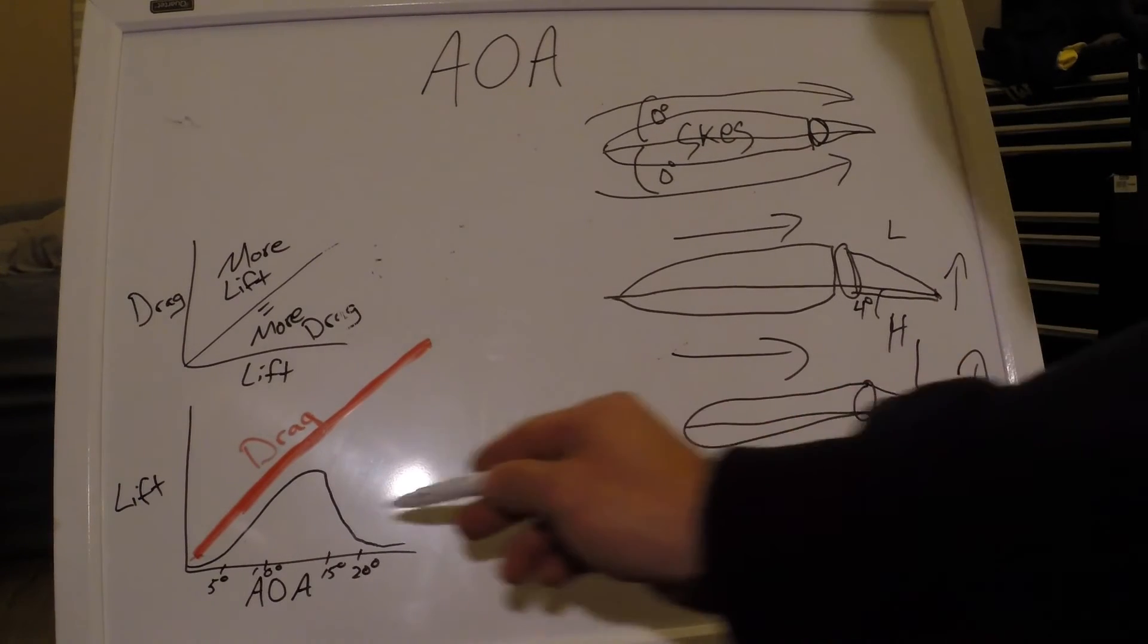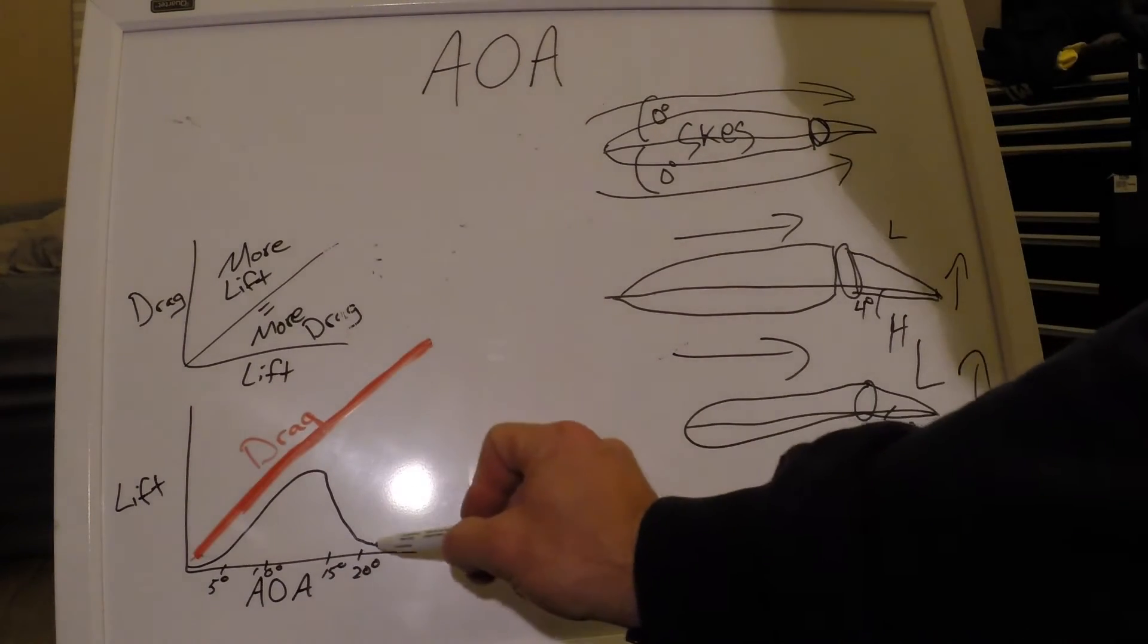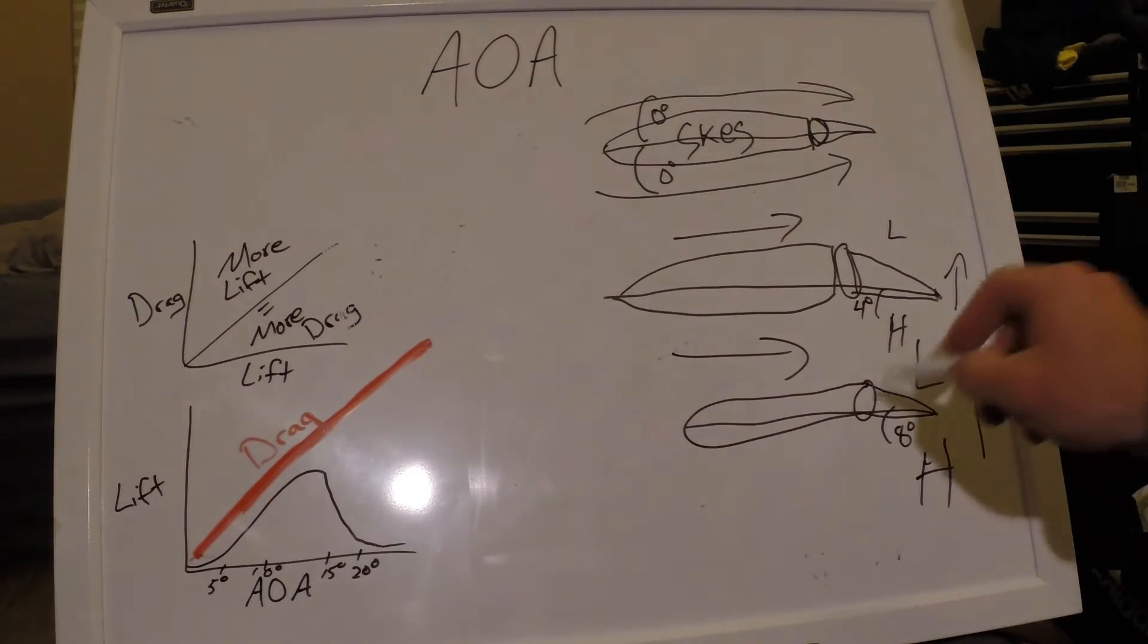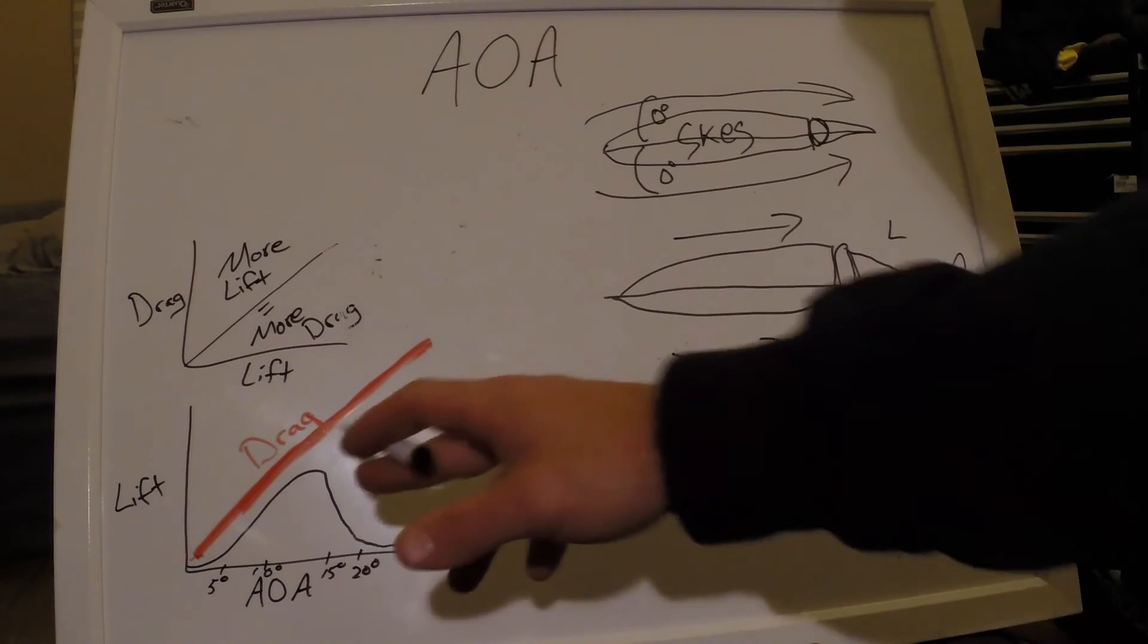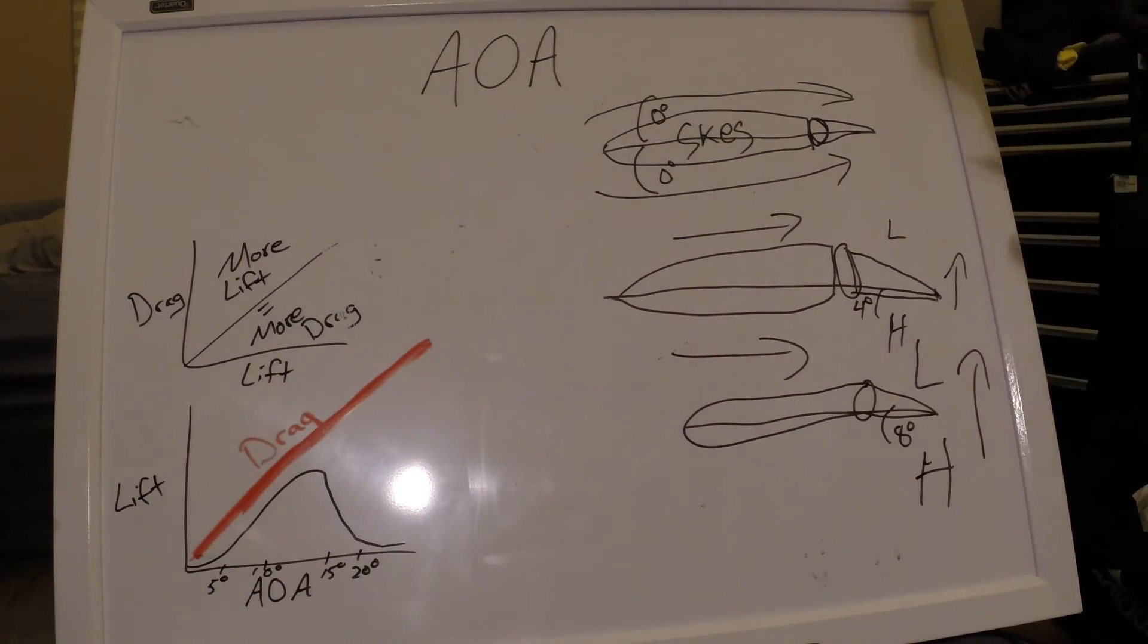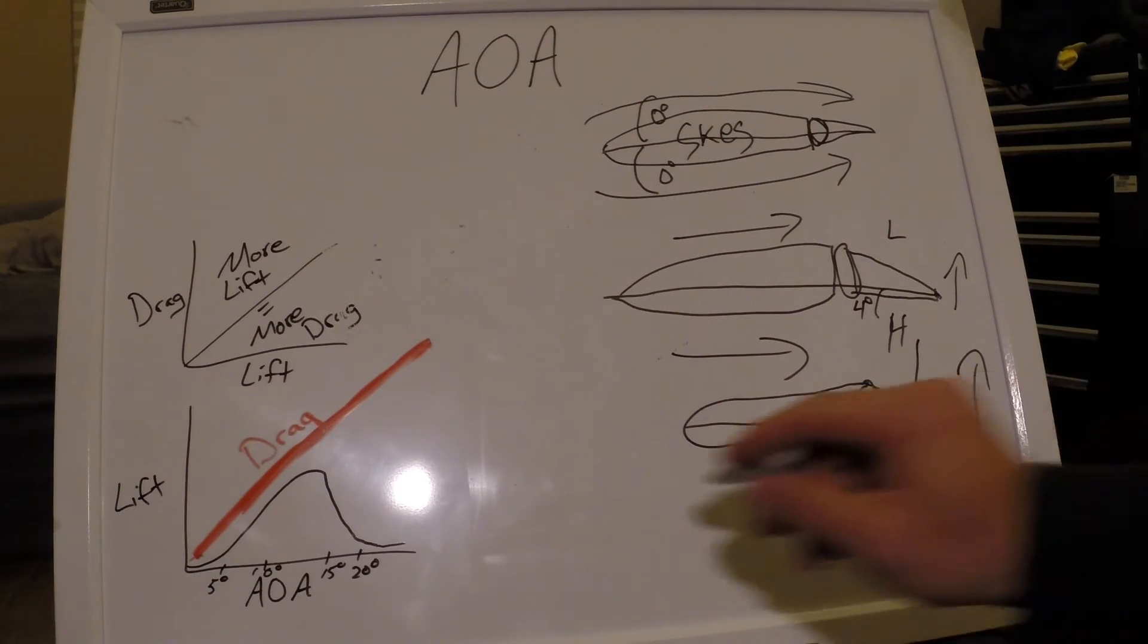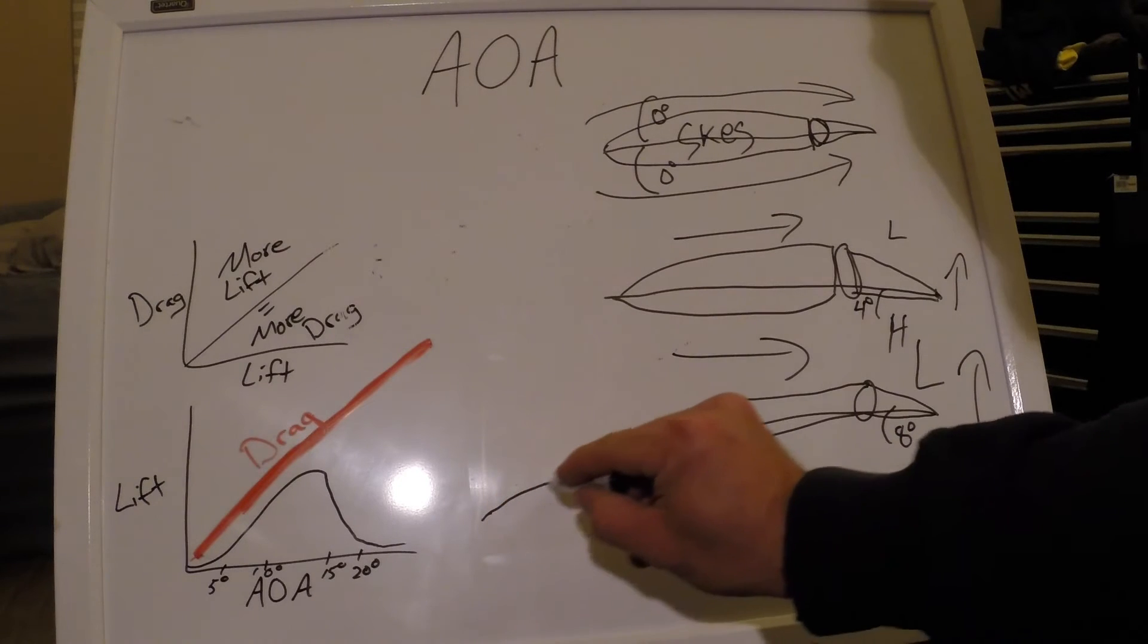We have this large drop-off in lift because we lose our low pressure on one side due to the turbulent water flow and not the laminar water flow. And our drag skyrockets and we create a lot of drag without a lot of turning force.